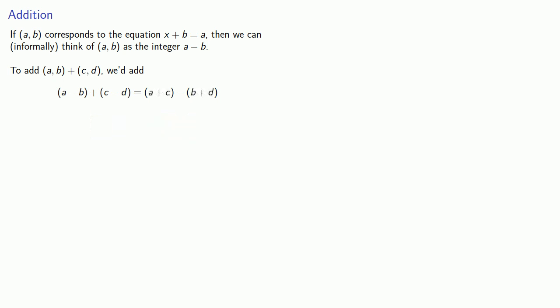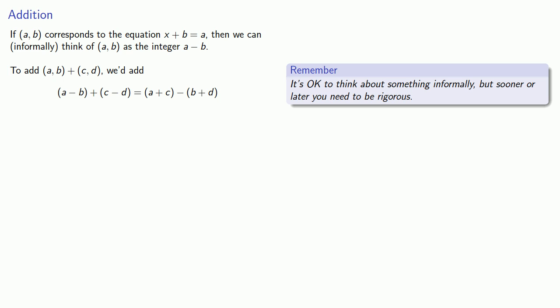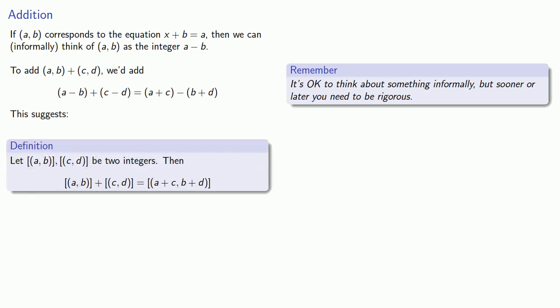Now, it's okay to think about something informally, but sooner or later you have to be rigorous. And that means setting down a definition which we will agree and abide to. So this suggests the following definition. Let's take two equivalence classes. Then the sum is going to be the equivalence class generated by the component wise sum. And that's a great definition, but we do need to make sure the result is independent of the representation.